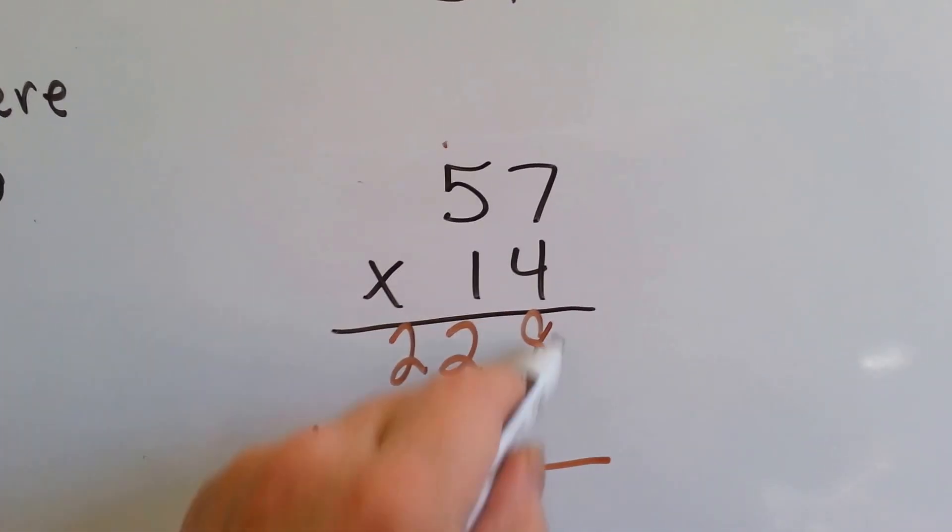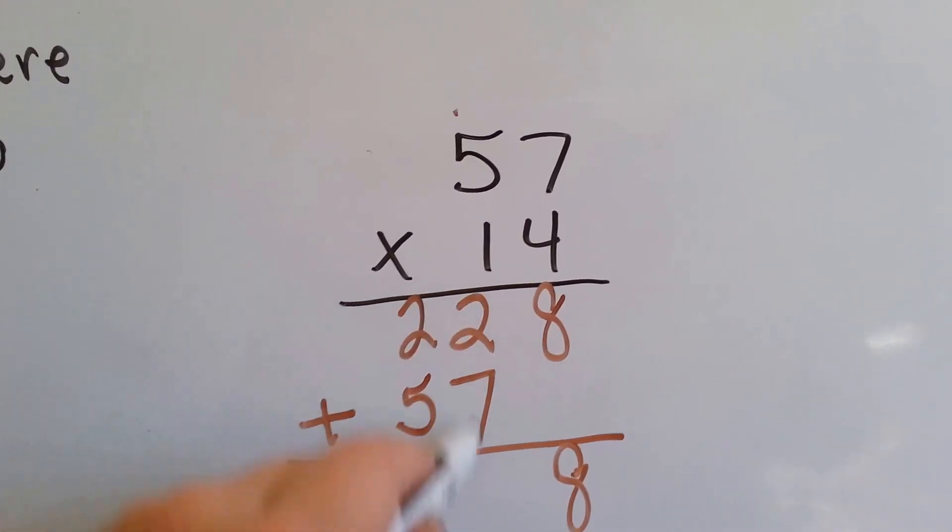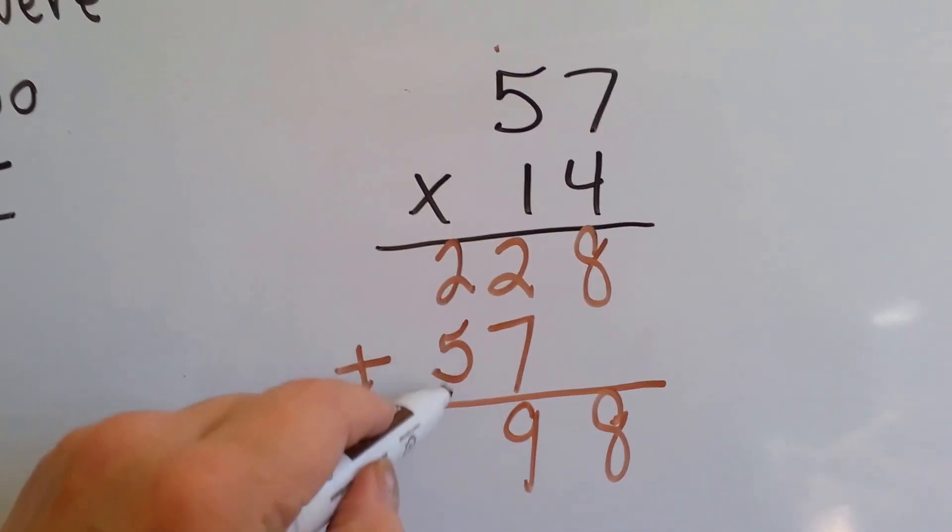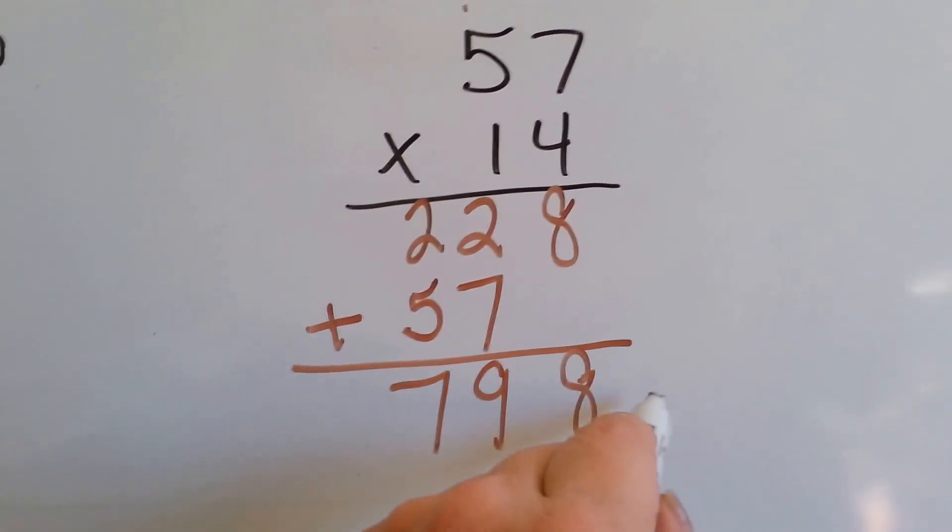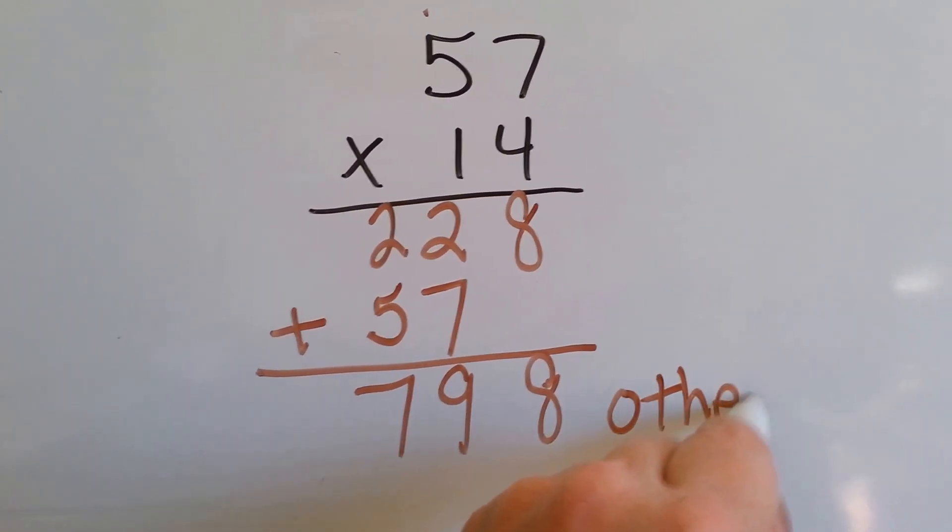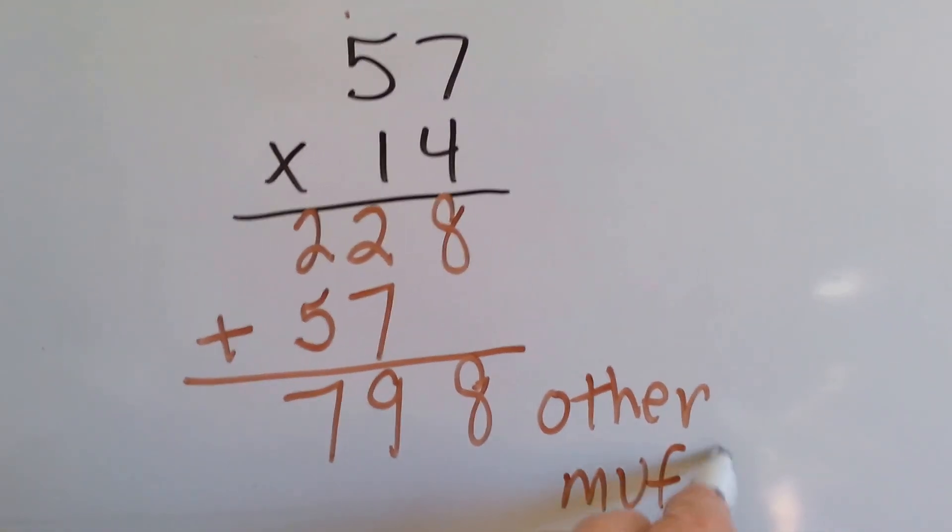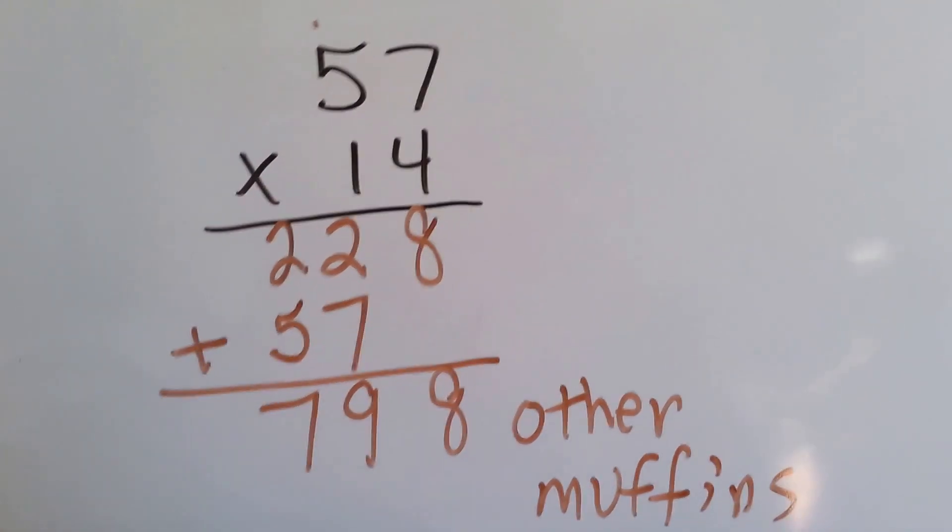Now we add. We drop the 8. 2 and 7 is 9. And 2 and 5 is 7. She sold 798 other muffins in the two weeks.